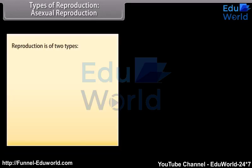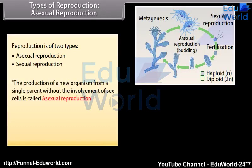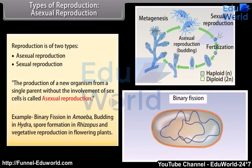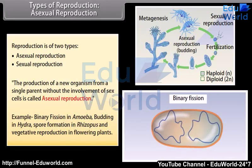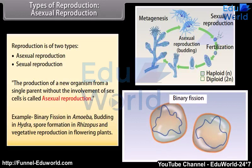Reproduction is of two types: asexual reproduction and sexual reproduction. The production of a new organism from a single parent without the involvement of sex cells is called asexual reproduction. Examples include binary fission in amoeba, budding in hydra, spore formation in rhizopus, and vegetative reproduction in flowering plants.